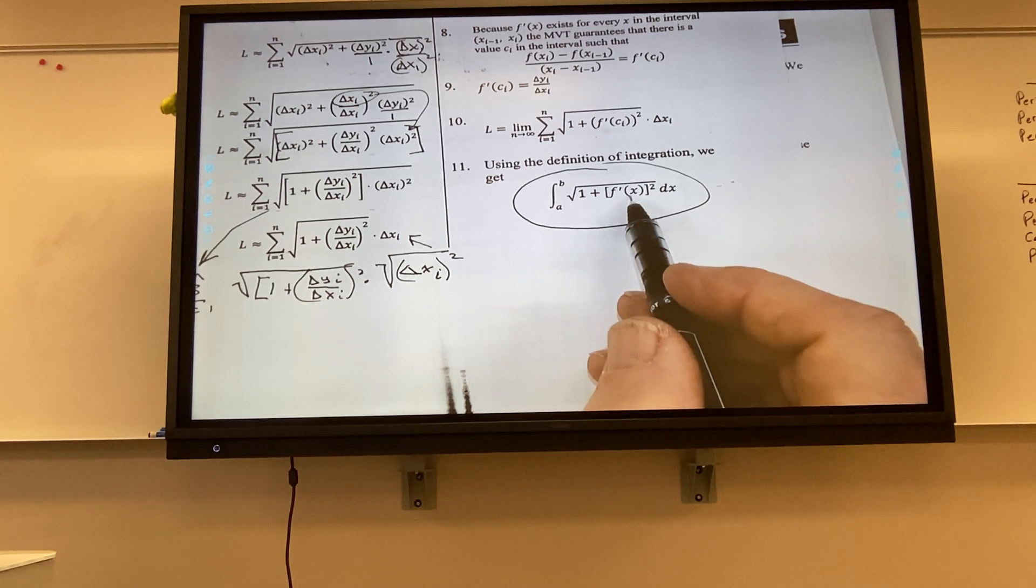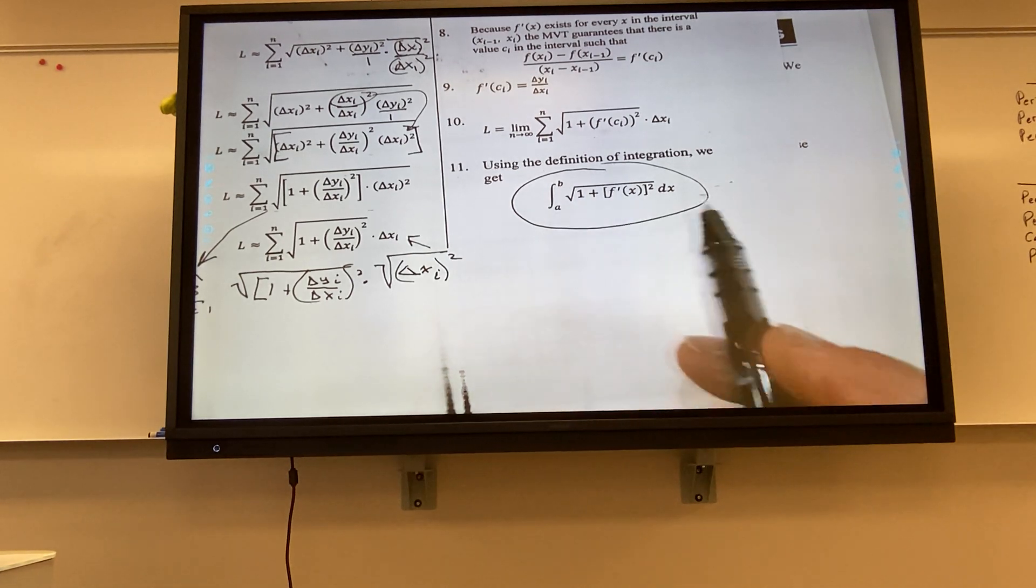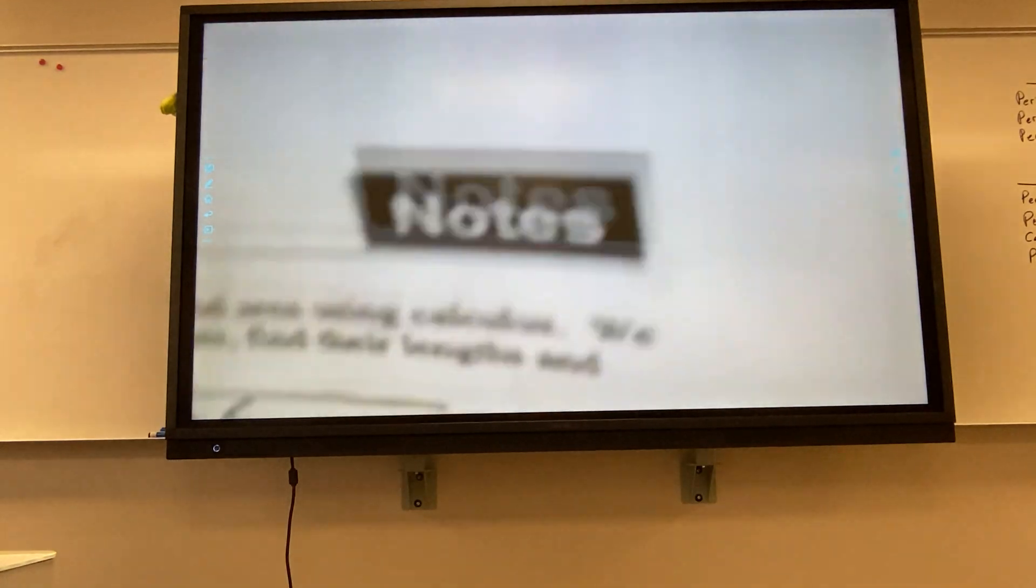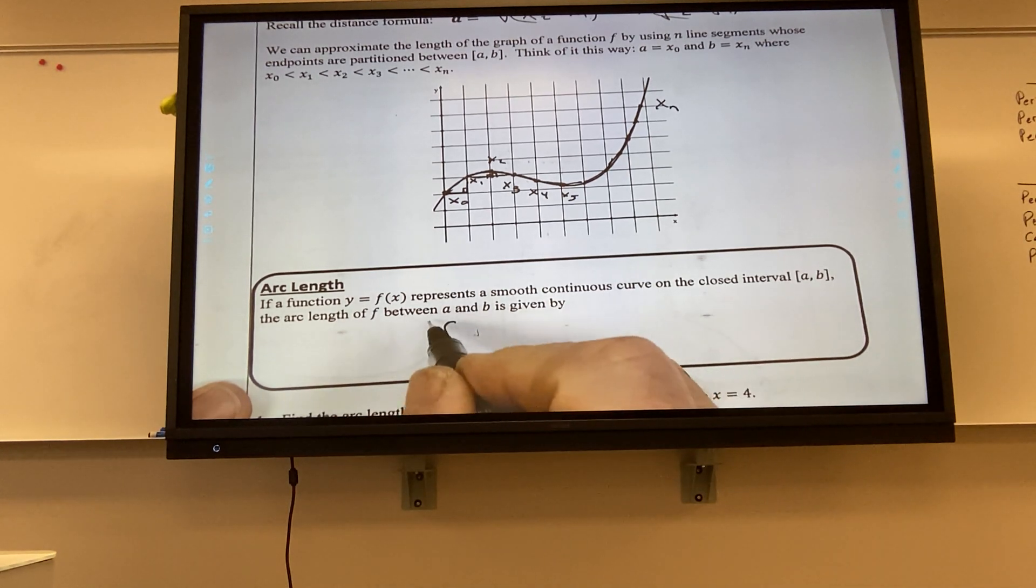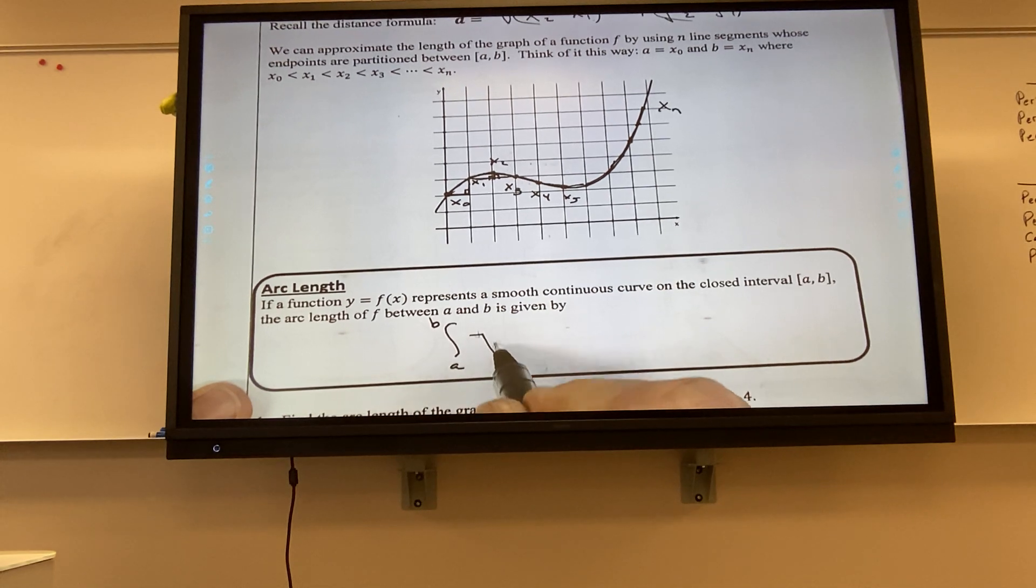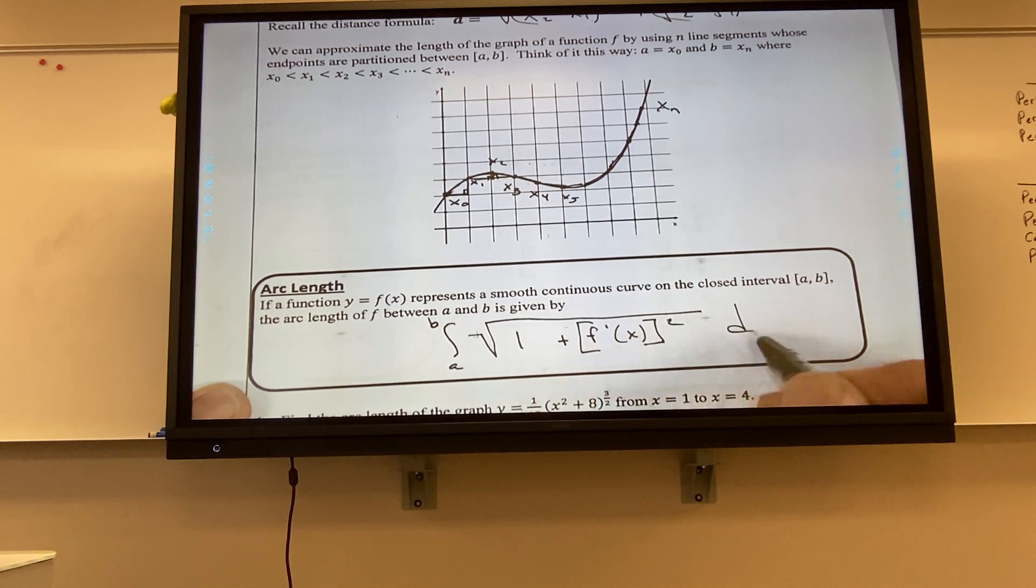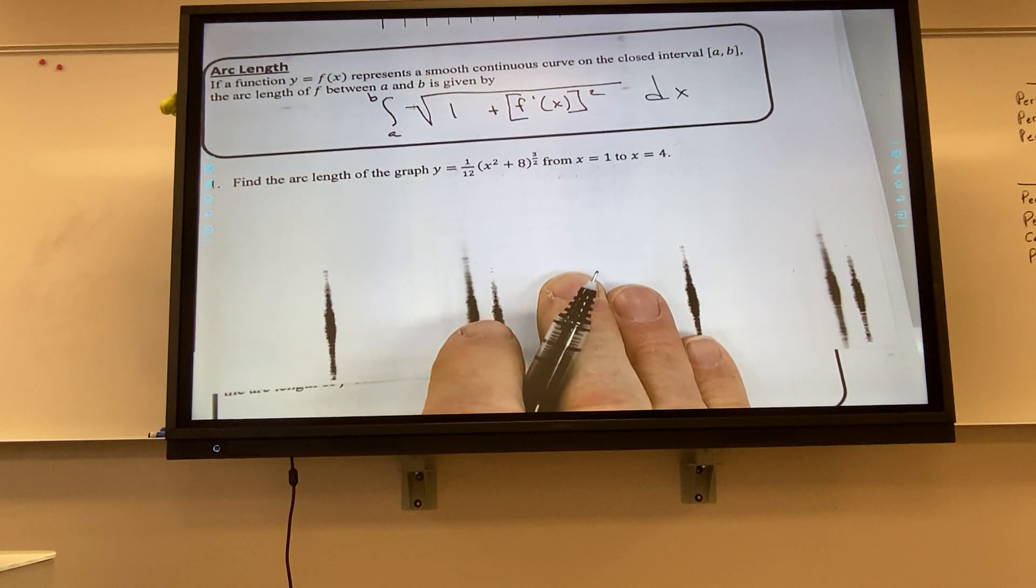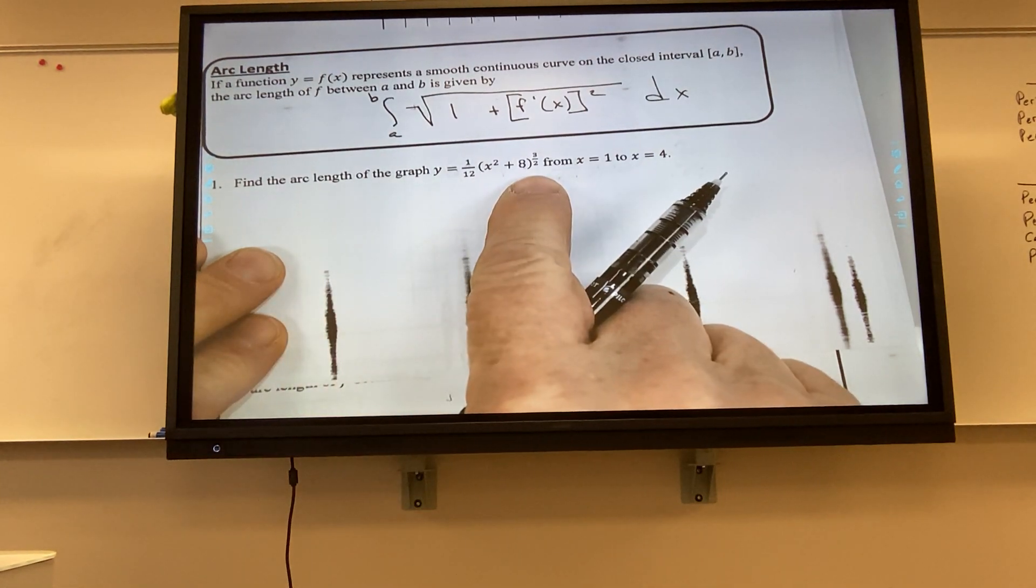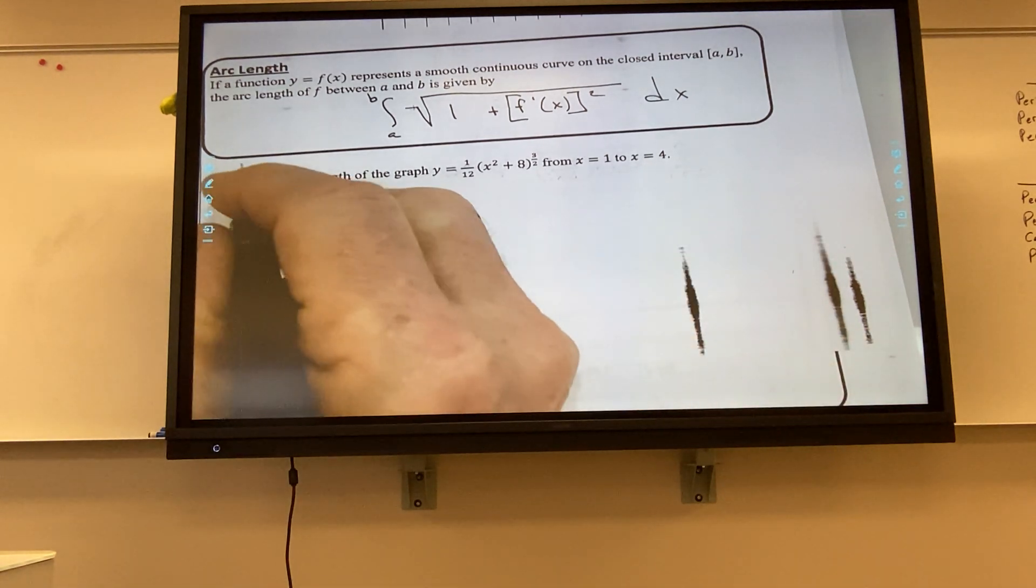So all we have to do is find the derivative of f, square it, add one to it, take the square root of it, and then integrate it from a to b. So let's take a look at the first example. So we have this graph. We want to know what the length of it is from one to four.